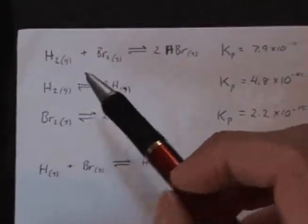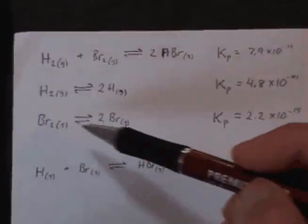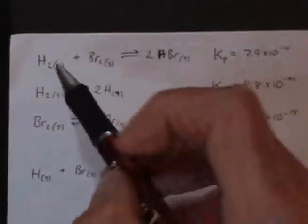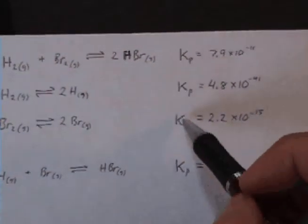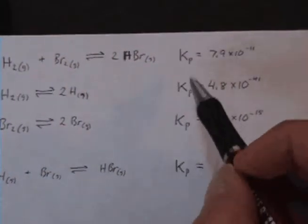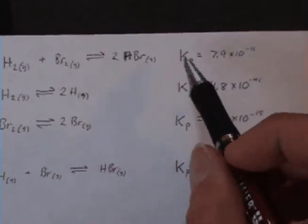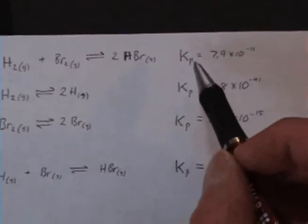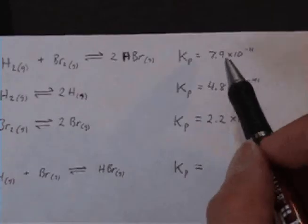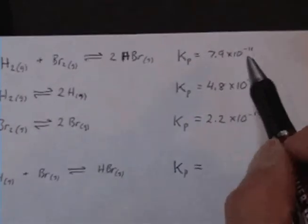Okay, here we have three different equilibrium reactions, each one with a corresponding value for the equilibrium constant. You'll notice this is Kp, indicating that this is in pressure units.